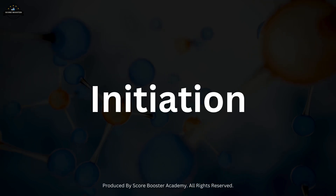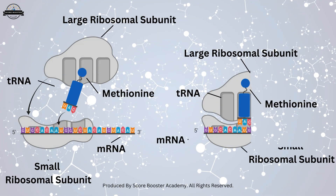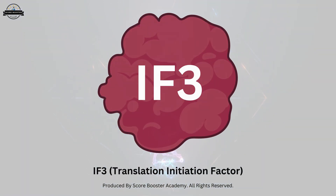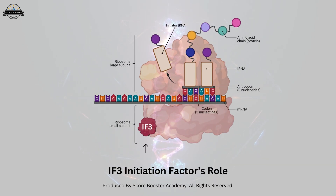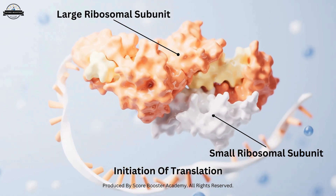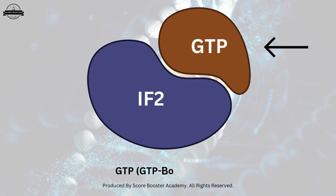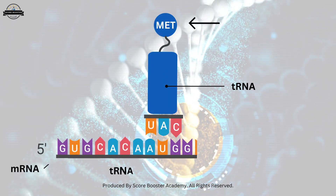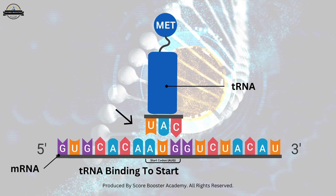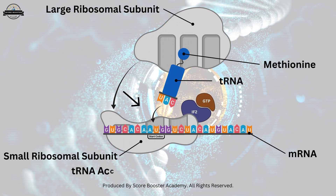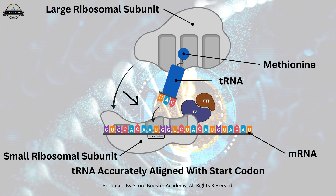Initiation is a highly regulated and complex stage involving several key factors to ensure the accurate assembly of the translation machinery. One critical initiation factor is IF3, which plays a pivotal role in preventing the premature association of the large and small ribosomal subunits. This ensures the small subunit remains free to bind to the mRNA and initiator tRNA without interference. Another essential factor is IF2, which in its GTP-bound form is crucial for the proper positioning of the initiator tRNA. This initiator tRNA carries the first amino acid, methionine, and its correct binding to the start codon is vital for the fidelity of translation.